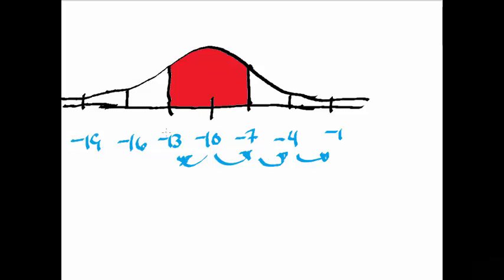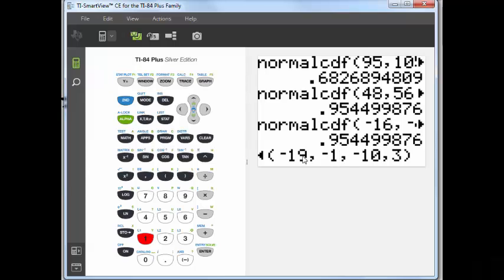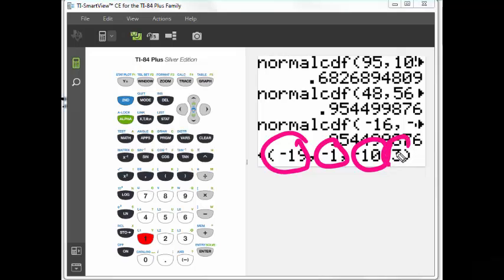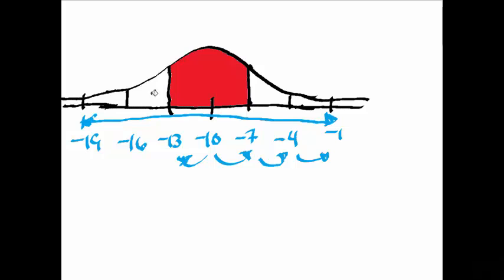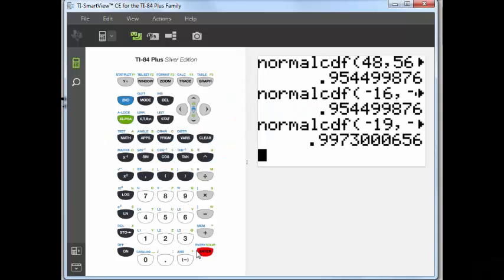What I'm really asking the calculator for is the total area in that region, and it's going to be about 99.73%. I press enter — yep, 99.73%. It doesn't matter what the mean and what the standard deviation is.